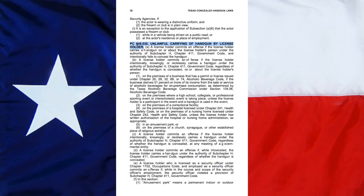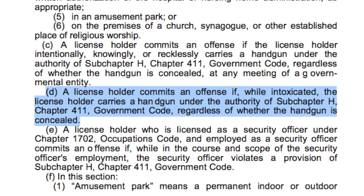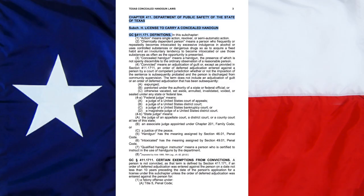Let's first look at Texas Penal Code 46.035, Unlawful Carrying of a Handgun by License Holder, Section D. A license holder commits an offense if, while intoxicated, the license holder carries a handgun under the authority of Subchapter H, Chapter 411, Government Code, regardless of whether the handgun is concealed.